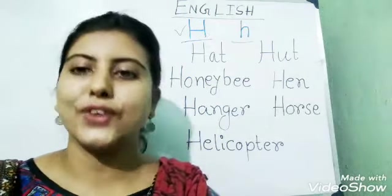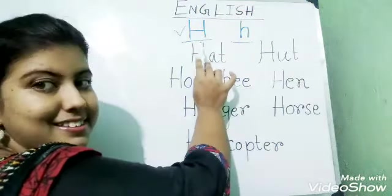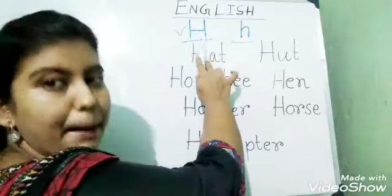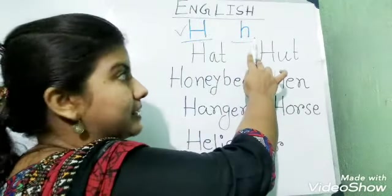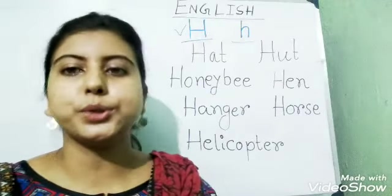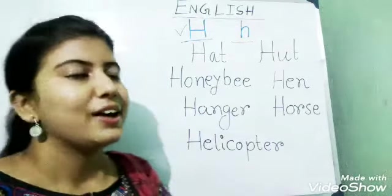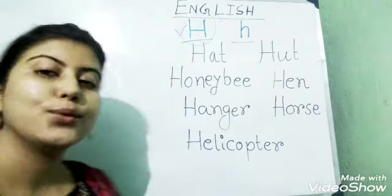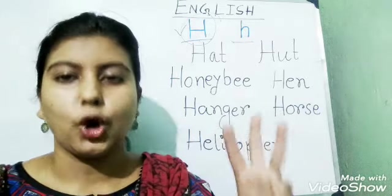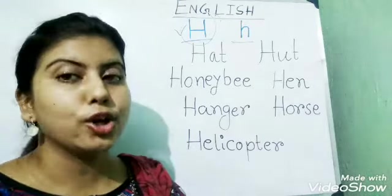Today's first alphabet is this one. This is H. This is H. This is H and this is H. First we will see how to write H and h. For H we will need three straight lines. Only three straight lines. Look carefully.